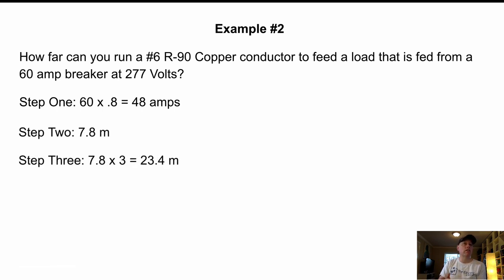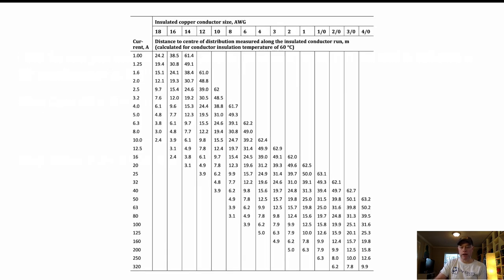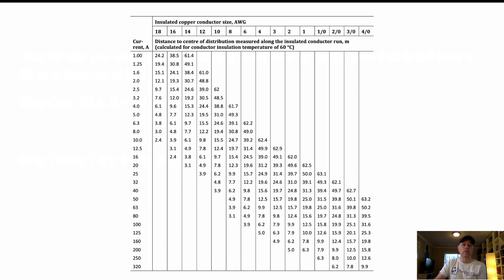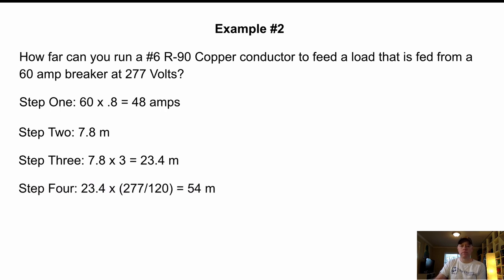So we do that 7.8 meters. Step three. Again, we're using 3 percent because remember that table that we were looking at this one rate. Let me go back here. This one right here is based on 1 percent. So we can multiply that by three. So we get 23.4 meters. Then from 23.4 meters, we multiply it by the voltage factor. In this case, we have 277 divided by 120 and that gives us 2.3. So 23.4 times 2.3 equals 54 meters.